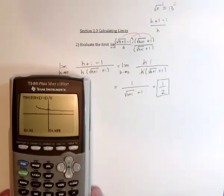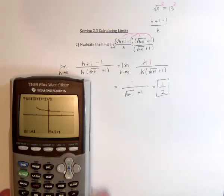then the y value, sure enough, is close to 1 half. And on the other side, if I use negative 0.01, it's close to 1 half. So that seems to be right.